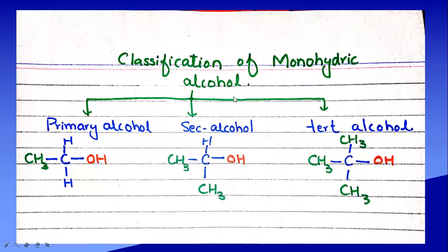Monohydric alcohols are further classified into three classes: primary alcohol, secondary alcohol, and tertiary alcohol. Primary alcohol is that in which the hydroxyl group is attached to the primary carbon. Secondary alcohols are those in which the hydroxyl group is attached to the secondary carbon — a carbon which is further attached to two other carbon atoms. Tertiary alcohol is one in which the hydroxyl is attached to a carbon atom that is tertiary in nature — meaning the carbon is attached to three other carbon atoms.